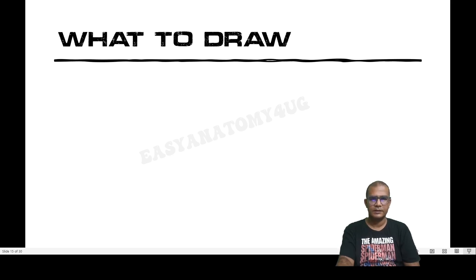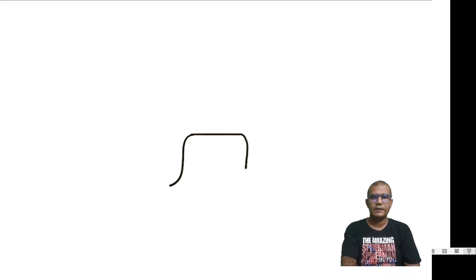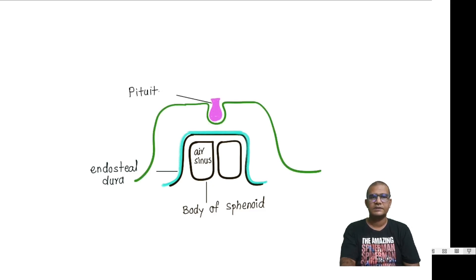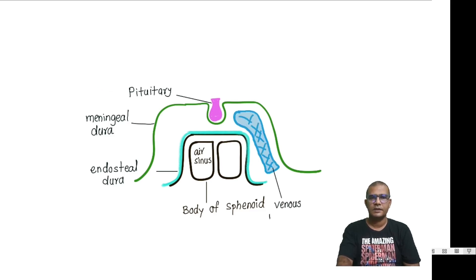In the theory paper, you have to draw one diagram — the coronal section of the cavernous sinus passing through the body of sphenoid. We begin the diagram with the body of sphenoid and sphenoidal air sinuses, then show the endosteal layer of dura mater. Next draw the pituitary gland surrounded by the meningeal layer of dura mater. On one side, draw the cavernous sinus filled with venous blood and show the trabeculae dividing it into various small spaces.